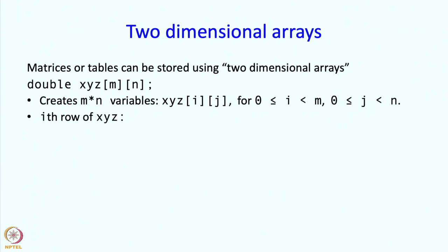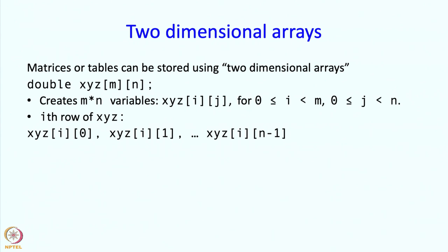So it creates m times n variables, and you can think of these as organized in a table with rows and columns. The i-th row of the array is the one in which the first index is i, while the other index can take all possible values 0 through n-1.